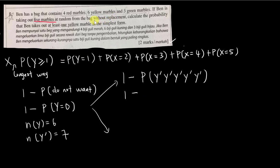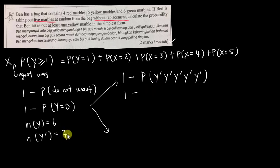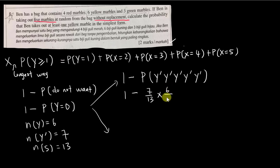Because the question says without replacement, you must be careful. A lot of students will just do seven over thirteen to the power of five, but you cannot use the power method with without replacement. So the first non-yellow selection is seven out of thirteen, and then since it's without replacement, we subtract one from numerator and denominator each time. The non-yellow count is seven, and the total sample space is thirteen.